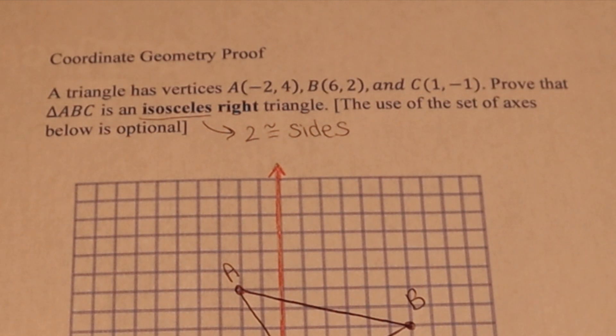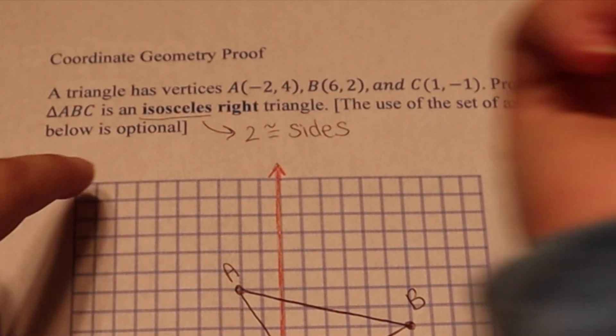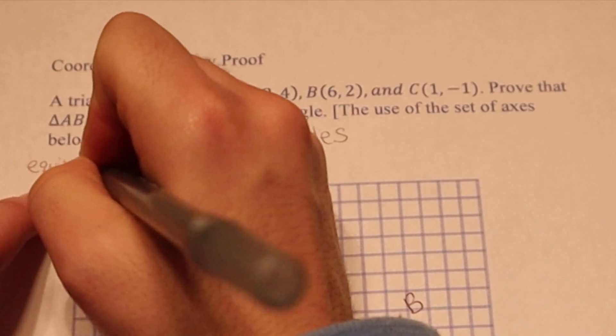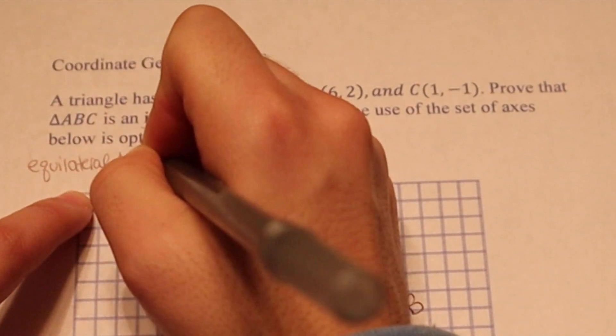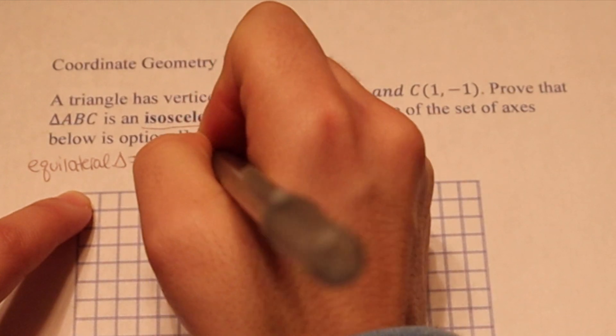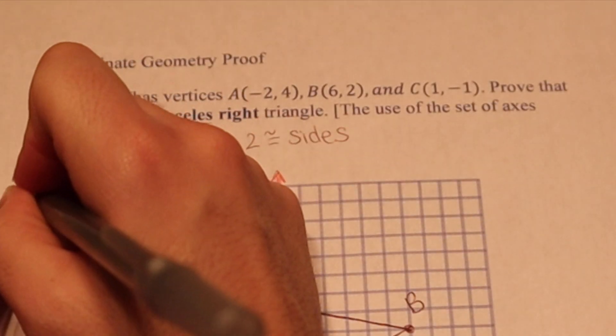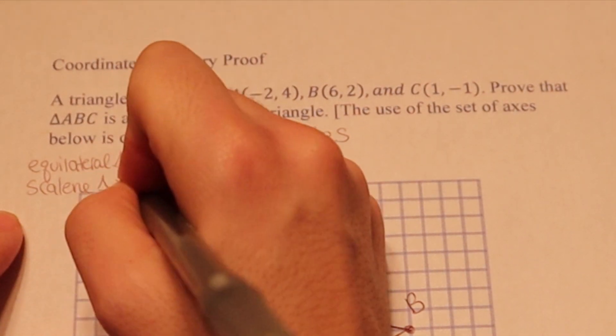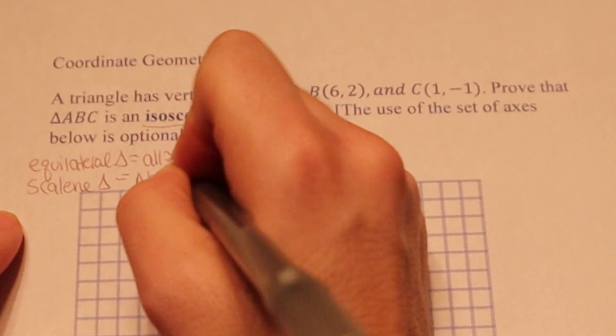We might as well just go over and review all the different types of triangles. So we also have an equilateral triangle, which is all congruent sides. And there's also something called a scalene triangle, which is no congruent sides.